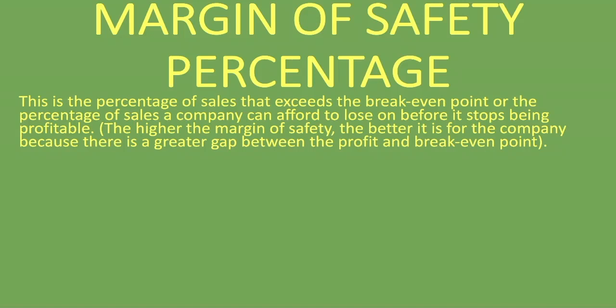When you look at the margin of safety percentage, this is the percentage by which sales exceed the break-even point. Remember, the break-even point is the point at which we are neither making a profit nor a loss. So the margin of safety percentage tells you by how much your sales have exceeded that break-even point.